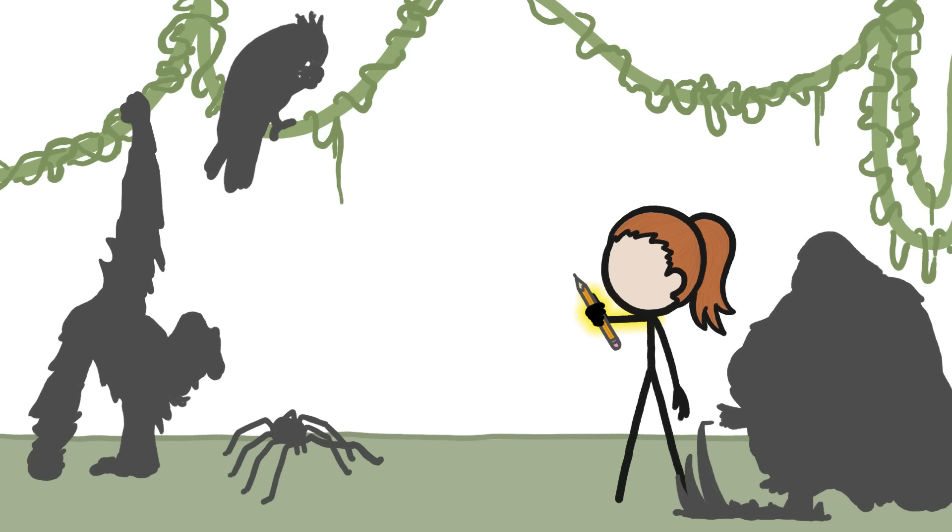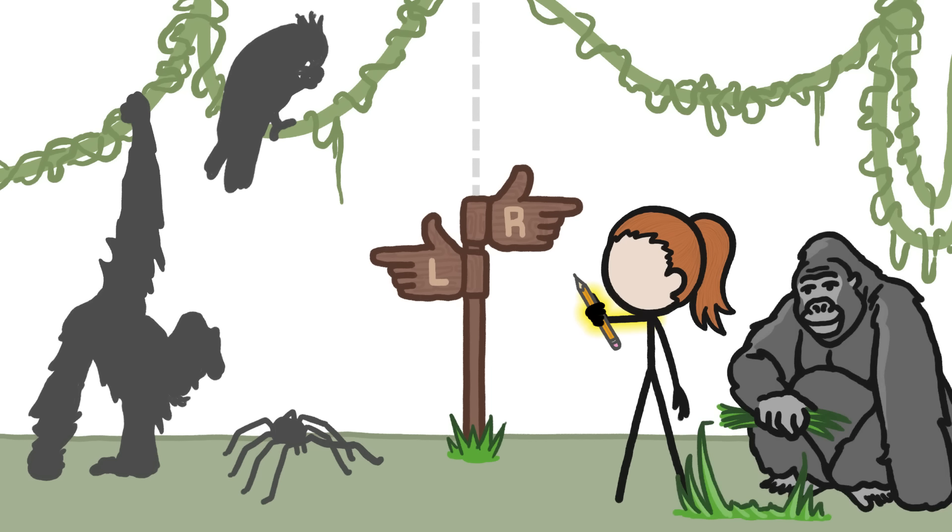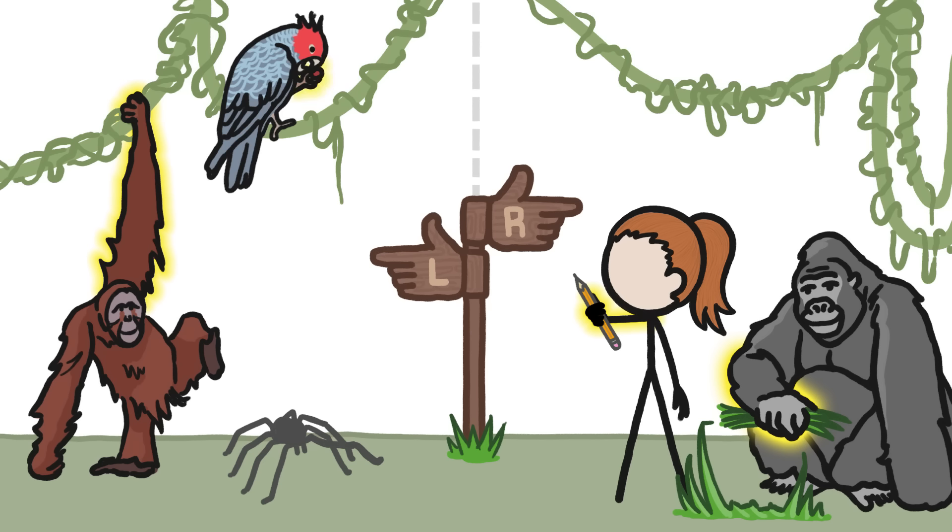Lots of other animals also have a so-called preferred side. Gorillas generally use their right hand for tasks requiring dexterity, while orangutans use their left. Many parrots hold seeds with their left foot, and Brazilian spitting spiders tend to favor their left forelegs while hunting.